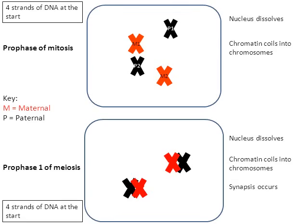Now that synapsis has occurred, the next thing to mention is a process known as crossing over, and this only happens in prophase number one of meiosis. In crossing over, parts of the chromosomes are going to swap with one another. Parts of the maternal and the paternal chromosomes swapped with one another. Parts of the maternal chromosome number one break away and connect with the paternal chromosome number one — the maternal and the paternal break off parts of their chromosomes and they recombine with one another. This process called crossing over shuffles up the genetic gene combination just a little bit, and we'll see why that's relevant near the end.